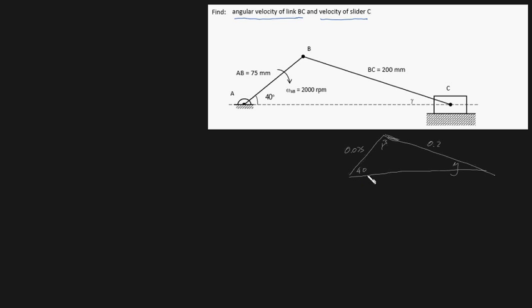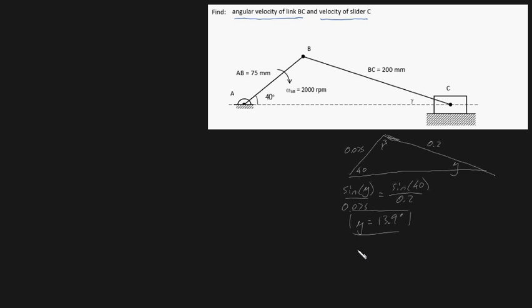We can solve for gamma by using the sine rule. We know that sine of gamma divided by its corresponding opposite distance, which is 0.075, is going to be equal to sine of 40 divided by its opposite distance, which is 0.2. You can solve for gamma using your calculator, and that leaves you with gamma equal to 13.9 degrees. We can also solve for beta — the sum of angles inside this triangle adds to 180, so 180 equals 40 plus beta plus gamma, which means beta must be equal to 126.1 degrees.